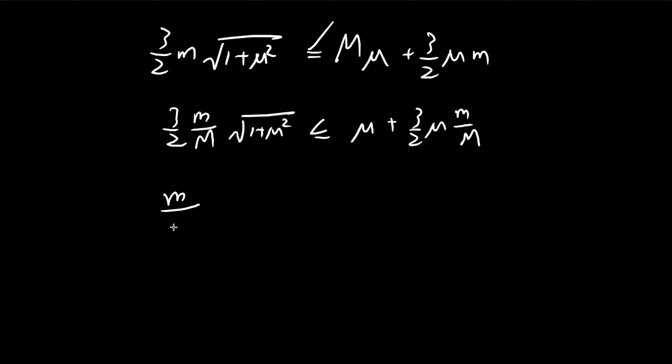And now we can group the ratio together. So that is smaller than mu. So now that M divided by M must always be smaller than 2 mu divided by 3.